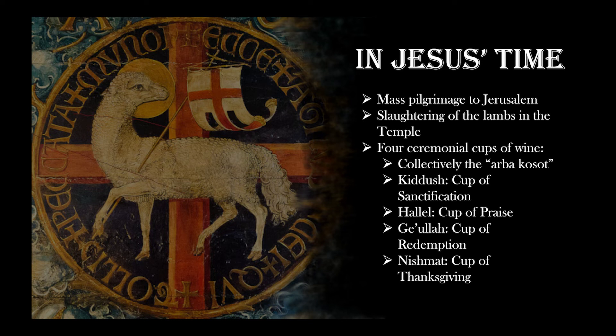Another very important detail are the cups of wine. This is one of the more obscure ones simply because you won't really find it in scripture — it's not in the original Mosaic rules for Passover, but it does develop over time. Together they are known as the Arba Kosot, the four cups of wine you drink during Passover — yes, four full cups of wine. The first is the Kiddush, or cup of sanctification, which begins the meal. By drinking this you are sanctifying the day to God, setting aside the day as holy.